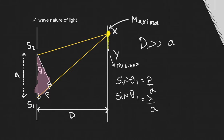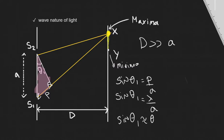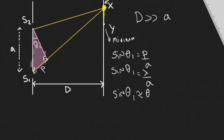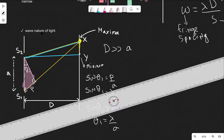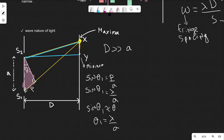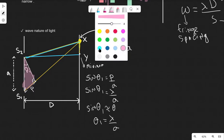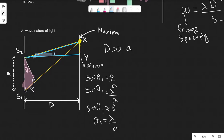Because D is significantly larger than A, we can apply the small angle approximation: sine theta is approximately equal to theta in radians. So we can write directly that theta 1 equals lambda over A. Now consider another triangle — highlighted in blue — which is actually similar to the one we just described.